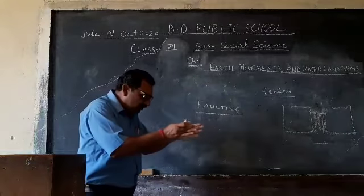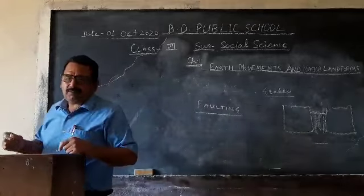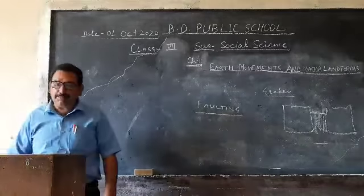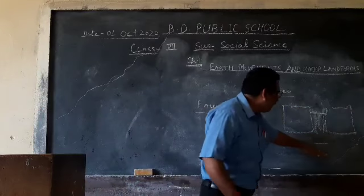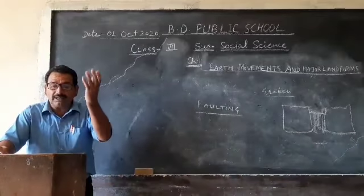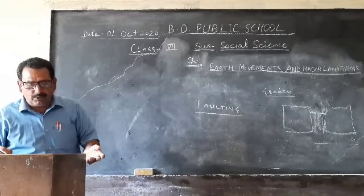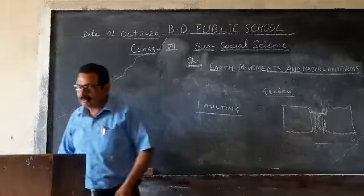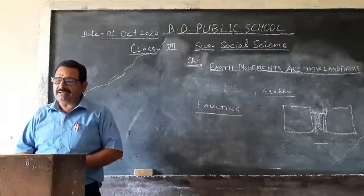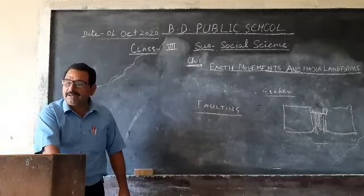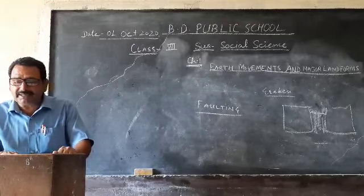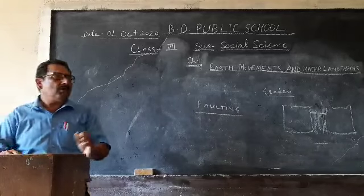On the other hand, if some part of the earth's crust is lifted up, after the pressure releases, the blocks are lifted up by internal forces — this is called a block mountain or horst. The Narmada and Tapti valleys, with the Vindhya and Satpura ranges, are examples of rift valleys and block mountains. The Narmada and Tapti valleys are rift valley examples and the Vindhya and Satpura ranges are the block mountain examples.